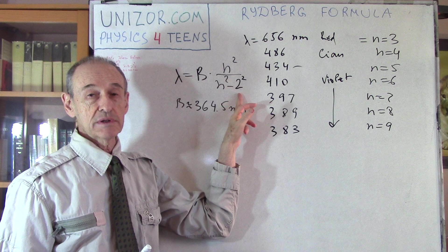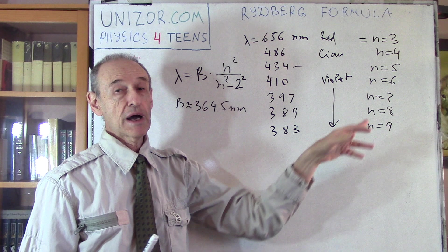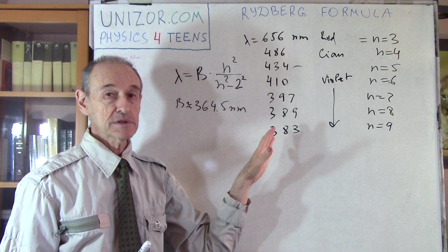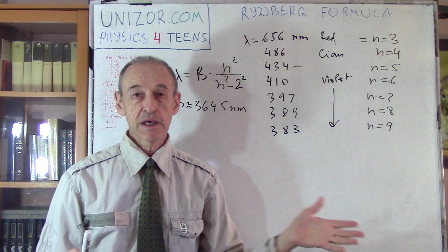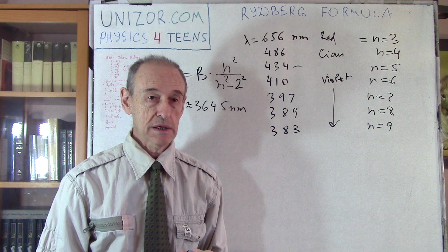What about jumping from, let's say, number 8 to number 5? No, this formula is not about that. This is only about jumps to level number 2, which is probably, in his particular case, was the most prevalent, or I don't know, his experiment, how it was organized.